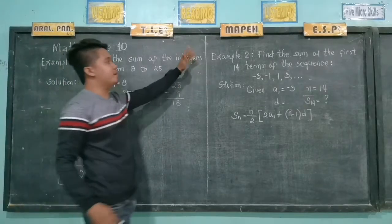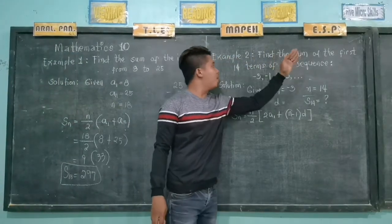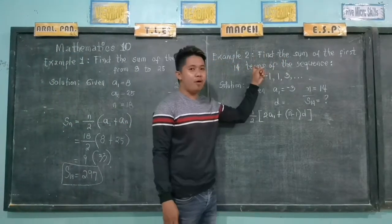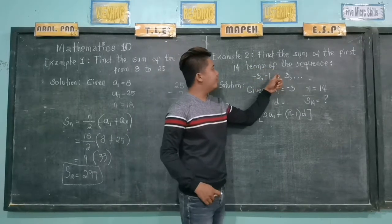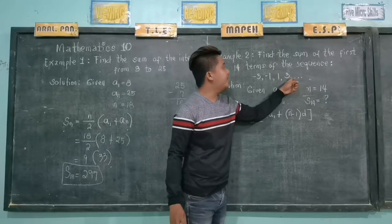So now we have Example number 2. Find the sum of the first 14 terms of the sequence negative 3, negative 1, 1, 3, and so on.